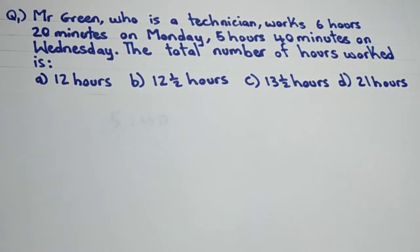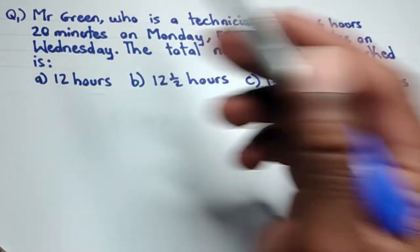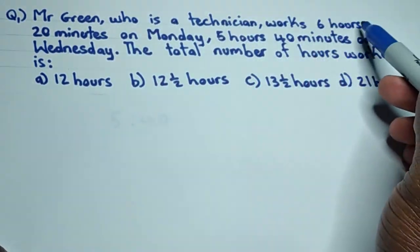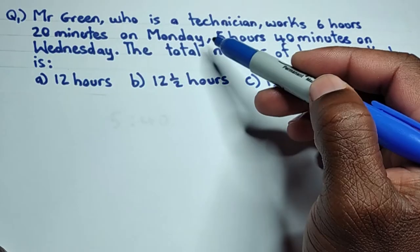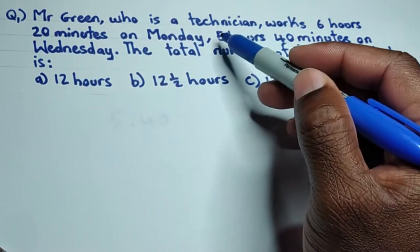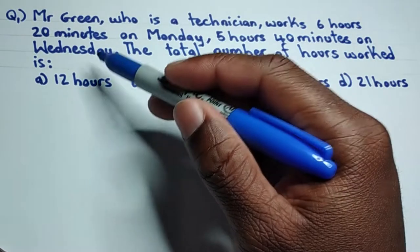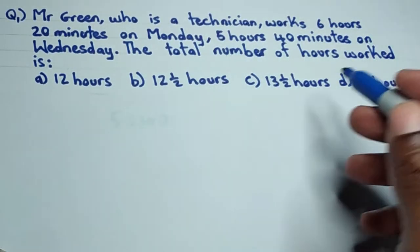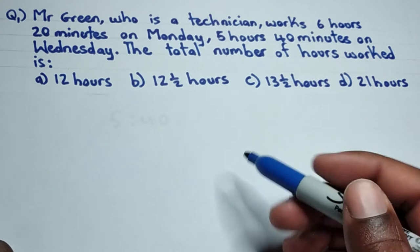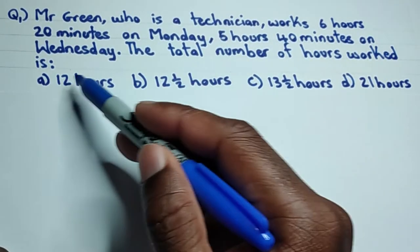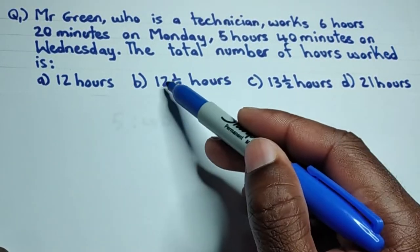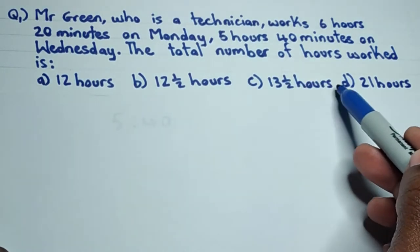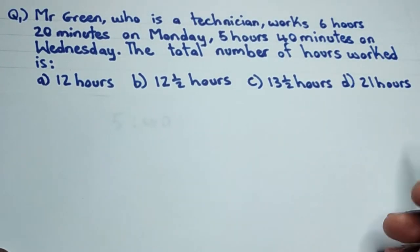Let's get started. In question one, we have Mr. Green, who is a technician. He works six hours and 20 minutes on Monday, and five hours and 40 minutes on Wednesday. The total number of hours worked is — and this is a multiple choice question. Option A: 12 hours, B: 12 and a half hours, C: 13 and a half hours, and D: 21 hours.